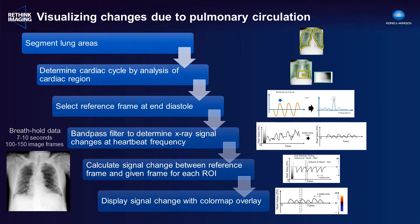We select a reference frame at end diastole. From that, we use a bandpass filter from our estimate of the cardiac rate to look at the signal changes associated with the heartbeat. And within each ROI within the lung region, we can figure out how much the x-ray attenuation changes from image to image as we move away from end diastole.